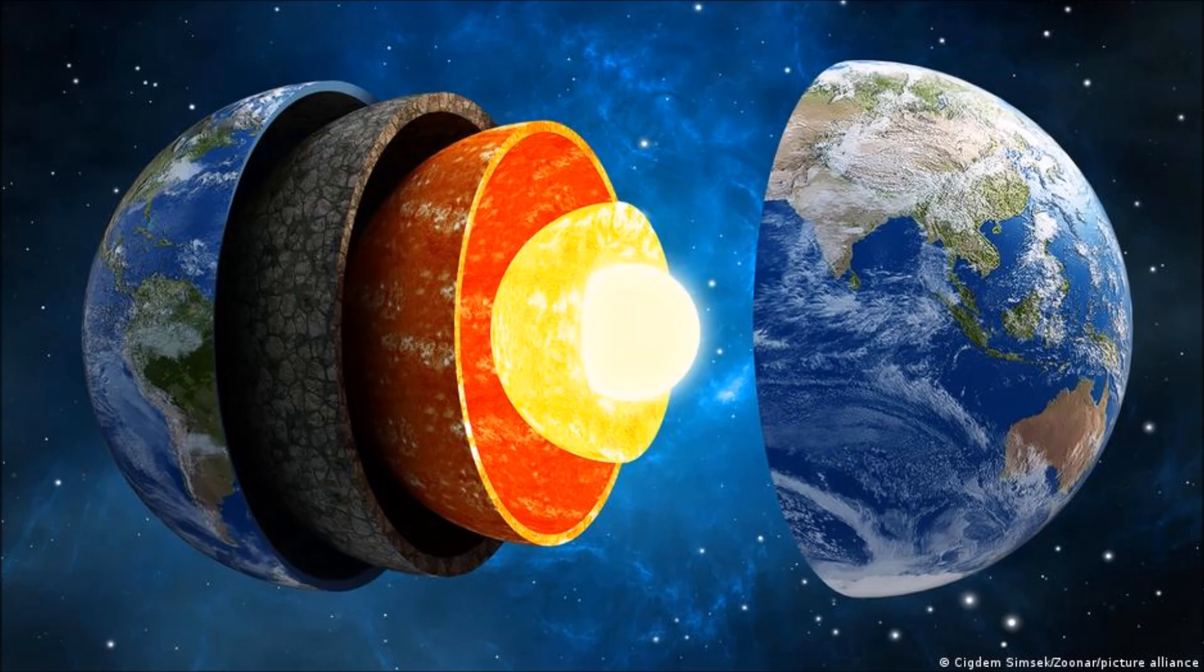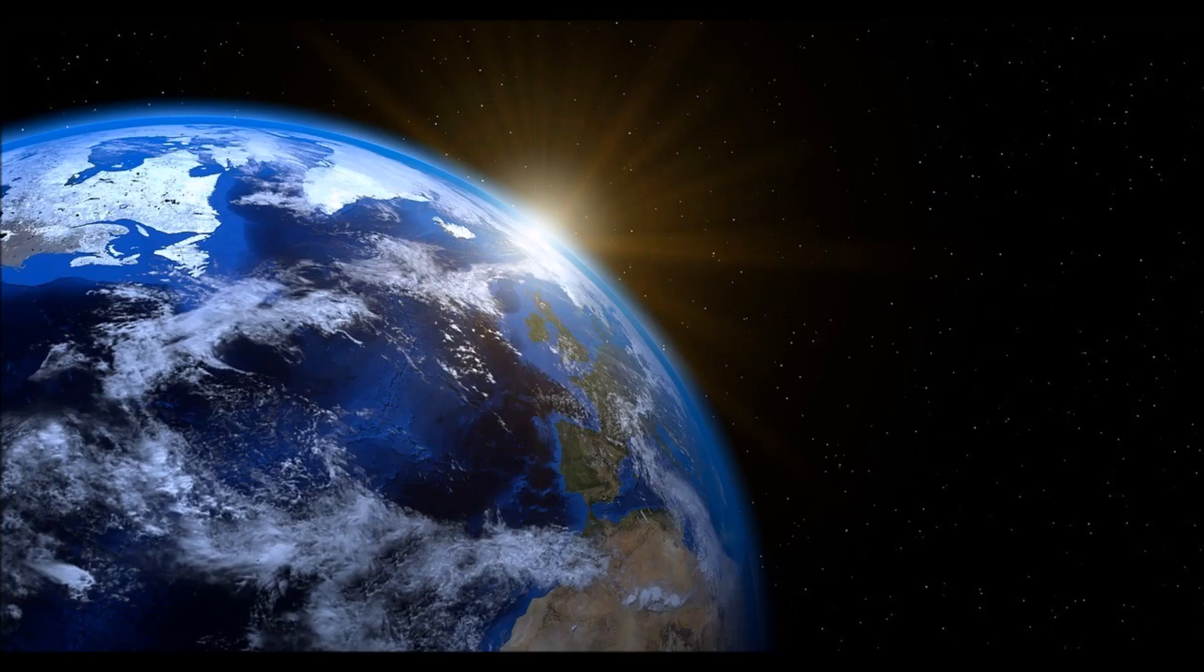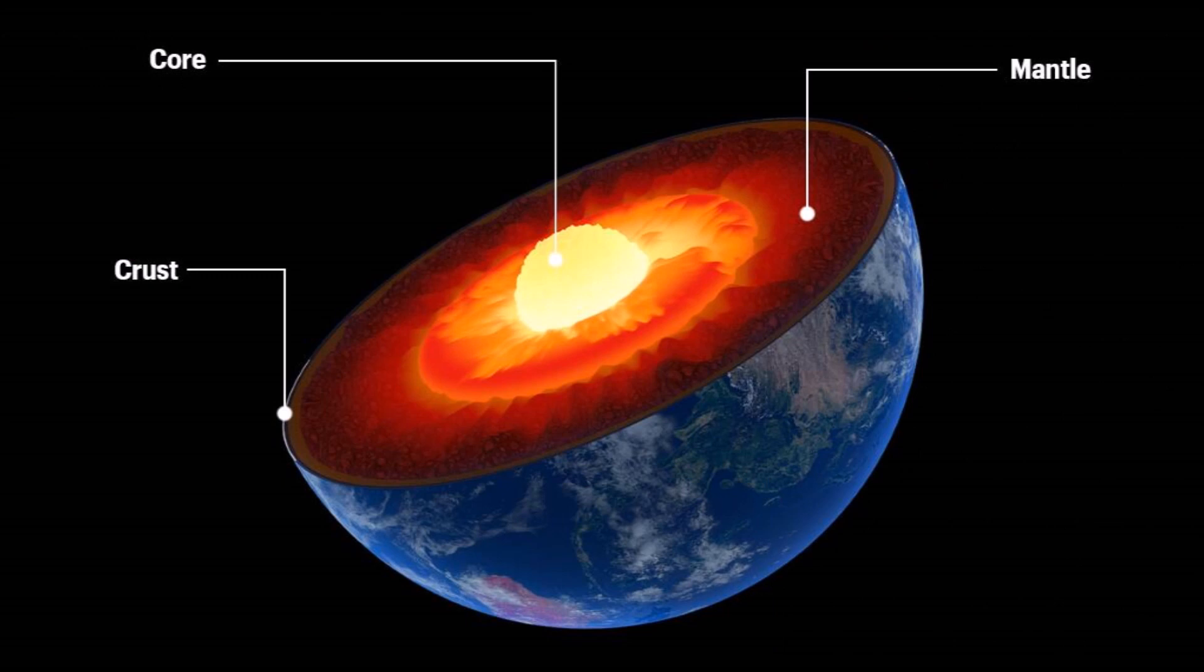If the earth reversed its rotation, one very important climate driving current called AMOC would disappear from the Atlantic Ocean. Instead, a different current would surface in the Pacific and become responsible for distributing heat around the globe.